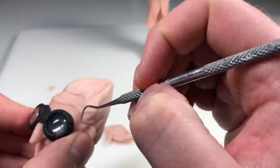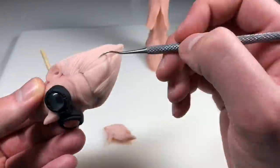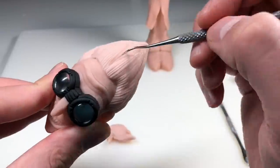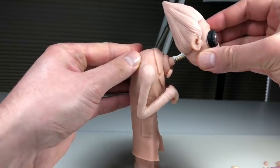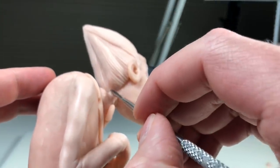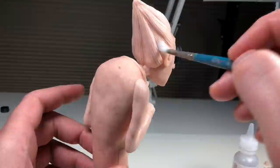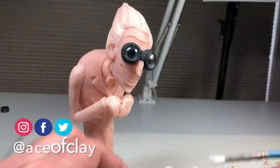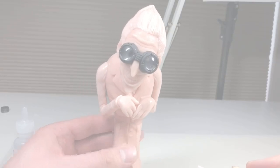Now to attach his head, I just added a little bit of Bake and Bond and I'm covering that in clay, blending that in with my spoon tool. Brushing the entire surface of the hair and arms with some clay softener to remove fingerprints, and he's ready for his last bake.